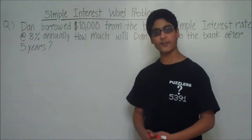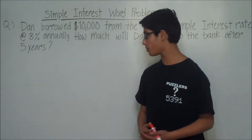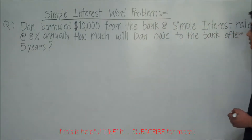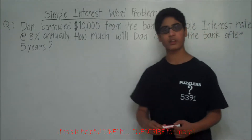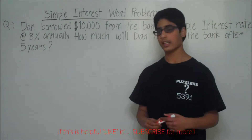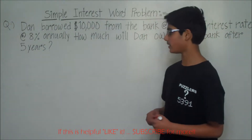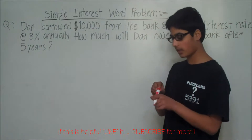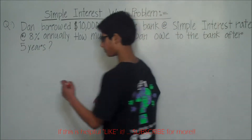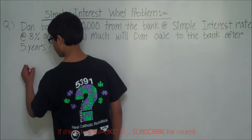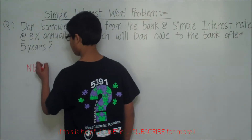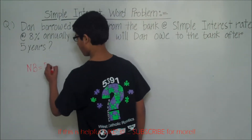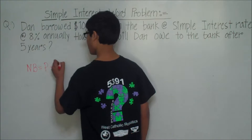Let's first write the formula to find out how much Dan will owe the bank after 5 years, or after some amount of years. Because we know that this is simple interest, the formula is: the new balance, NB for new balance, is equal to P plus I times T.